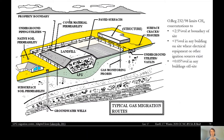Landfill gas is constantly being produced by our waste in the landfill. There's some pressure and it wants to get out — hopefully it's going to go into our landfill gas collection system, but there are all these other pathways where it could move through as well. This figure just shows some of the ways that landfill gas can come out of the landfill and where we need to be aware of it having the potential to end up.